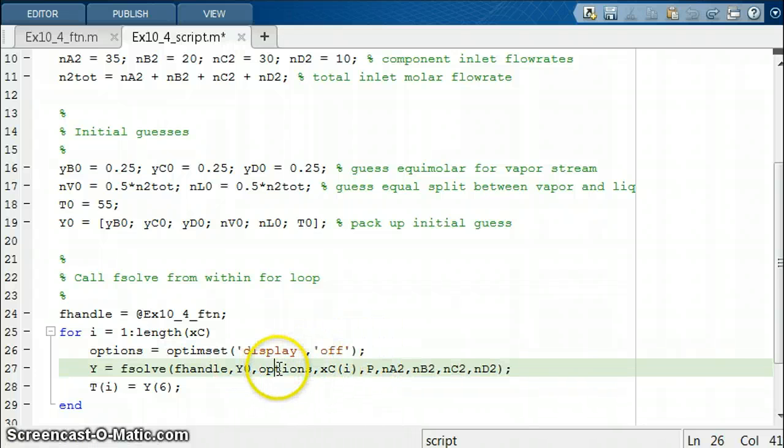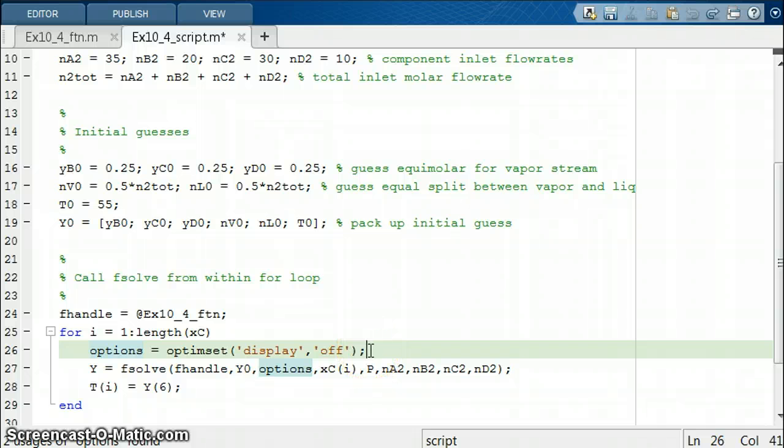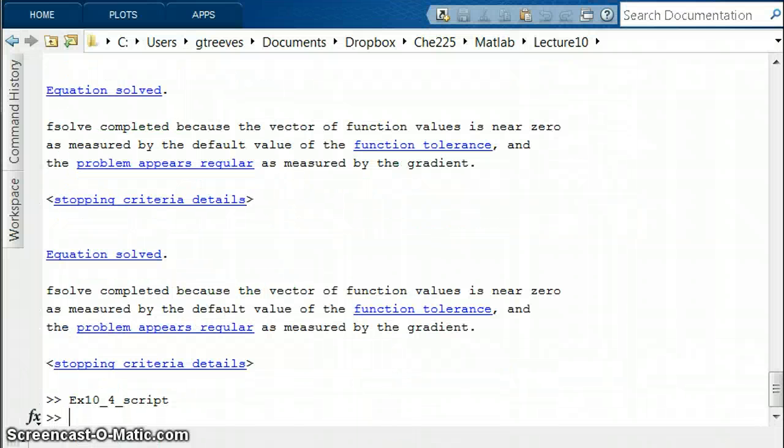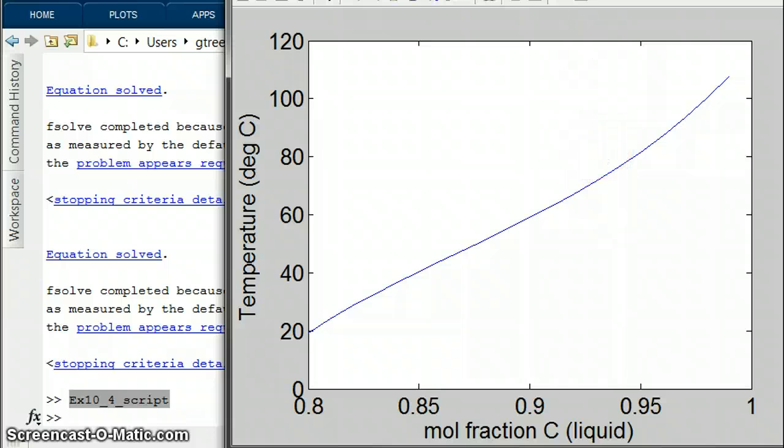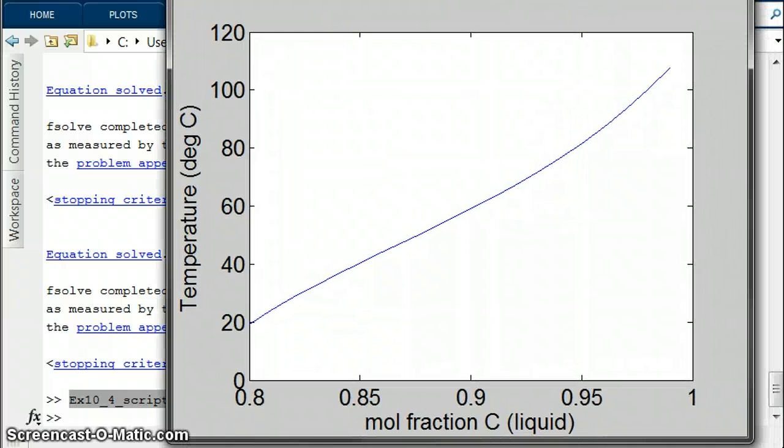If I run it this time and we look over here, it ran the script without spitting out all that junk. Here is the final output. We see, of course, as the mole fraction of C required goes up, the temperature of the reboiler must go higher and higher to make it so that C is more and more pure and you boil off more and more of the more volatile product D.